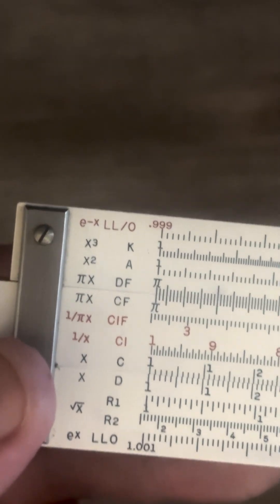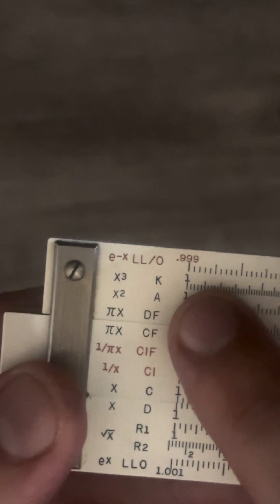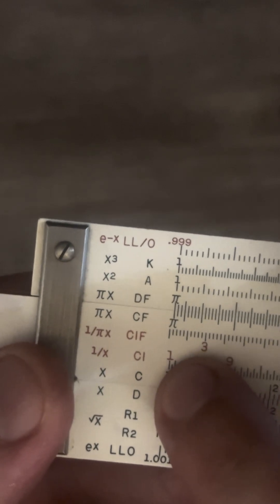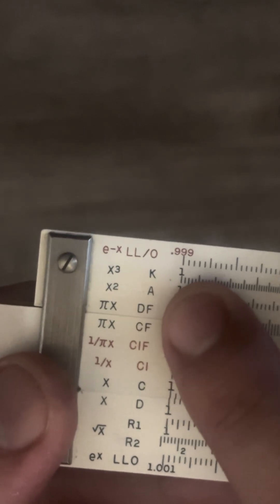Okay guys, we're going to go over a couple different scales today. We're going to go over the folded scales which is C, F, and D, F. Now those look familiar because they're C and D but folded. That's what the F stands for.